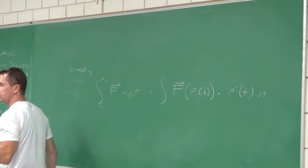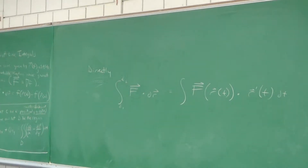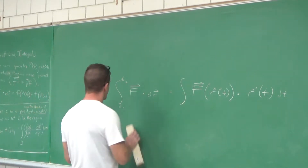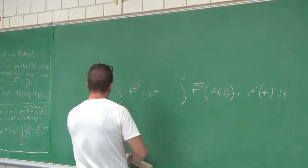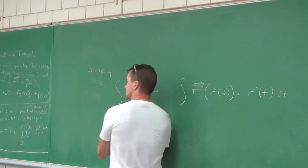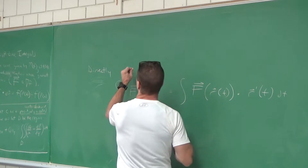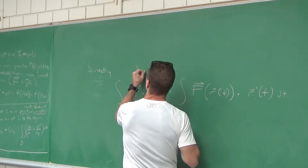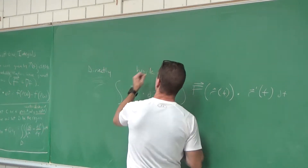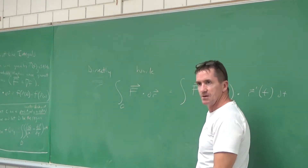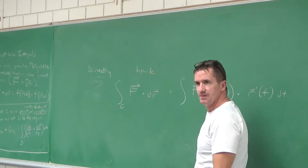Doing it directly will always work — we could do all line integrals directly. They always have that funny-looking integral symbol with a little C. Keep in mind, these line integrals of the vector field find the work done by the vector field to move a particle along some path.